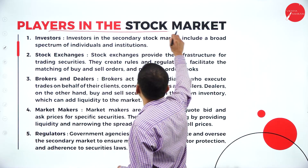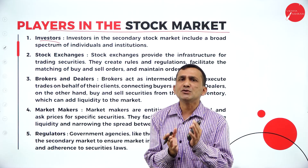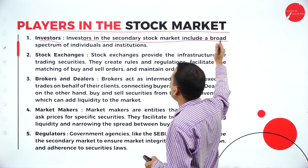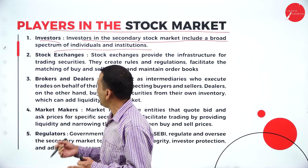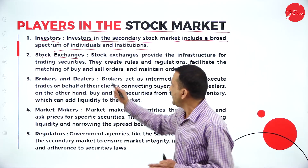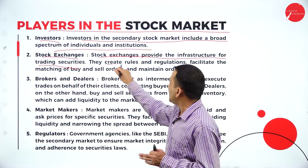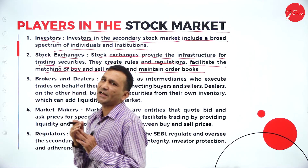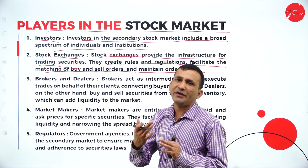Who are the players in the stock market? The first one: investors. Investors are everywhere because of the financial products being offered. You need to identify who the investor is — either individual or institutional. The secondary market includes a broad spectrum of individuals and institutions. Even in private placement of institutions, they can also be investors. Next: stock exchange. There are two major stock exchanges — Bombay Stock Exchange and National Stock Exchange. The stock exchange provides the infrastructure for trading securities and provides a platform to do trading. They create rules and regulations, facilitate the matching of buying and selling orders, and maintain the order book.